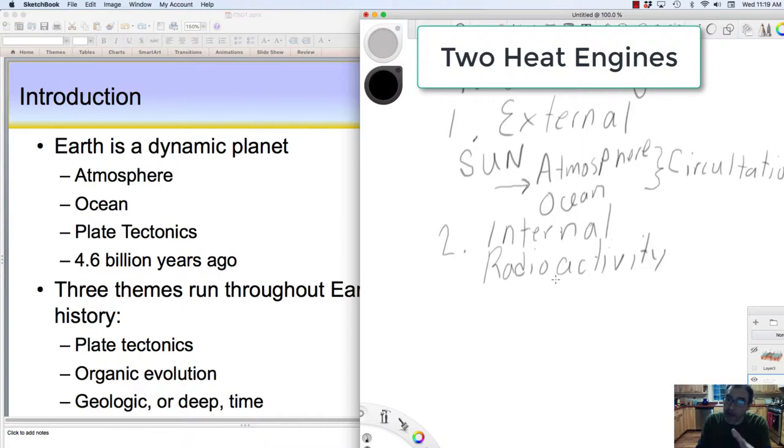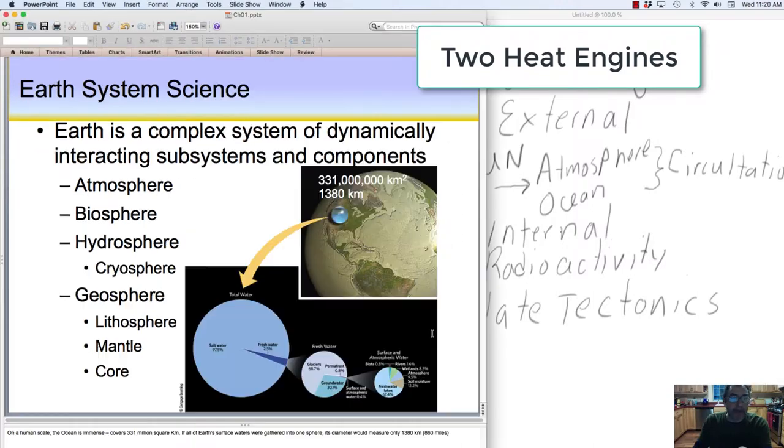The internal heat engine is really what's driving plate tectonics. So we have two heat engines: one the external, the second the internal heat engine.